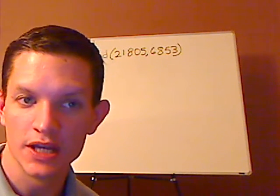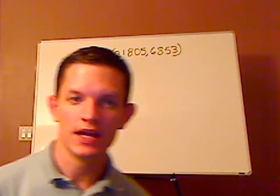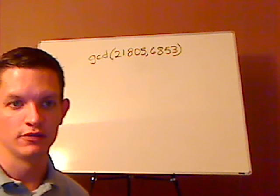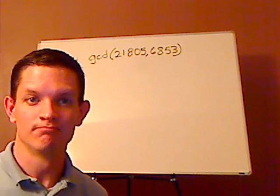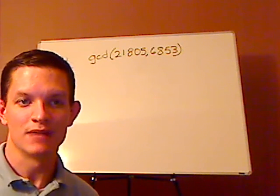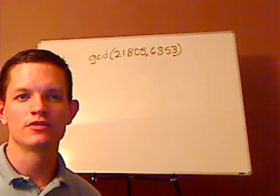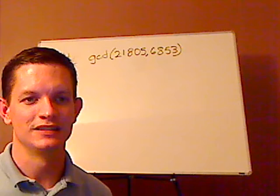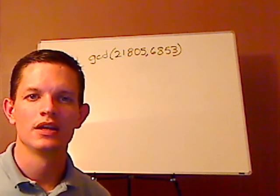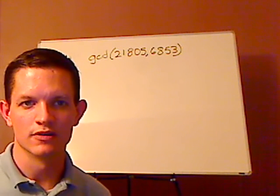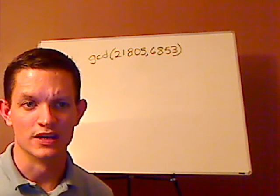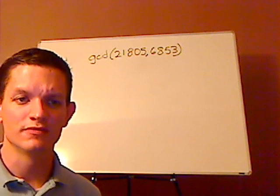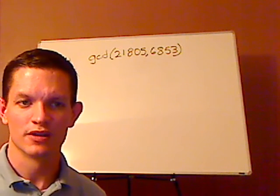Hi, I'm JD and what we're going to be doing today is using the Euclidean algorithm to solve the GCD, Greatest Common Divisor, of these two large numbers: 21,805 and 6,853. So if you would, pause the video and see if you can try this one on your own.